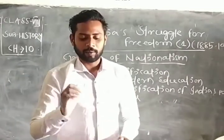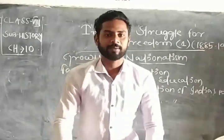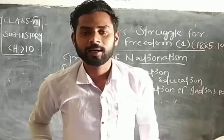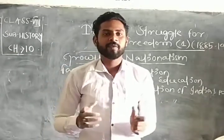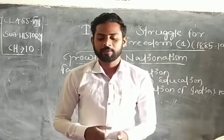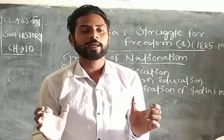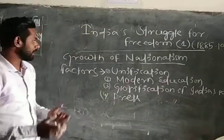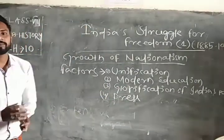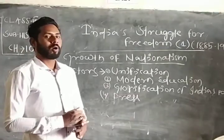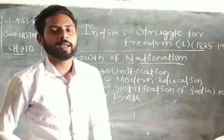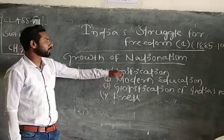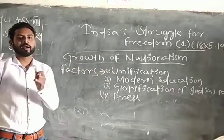Let's start the chapter from the failure of the Revolt of 1857 — the Sepoy Mutiny, or the first freedom struggle of Indian people. It was a failed revolution, but it awakened the Indian people to fight unitedly against the Britishers. After 1857, the feeling of nationalism arose in the heart of every Indian. These are the factors responsible for the growth of nationalism: first, unification; second, modern education; third, glorification of India's past and press.